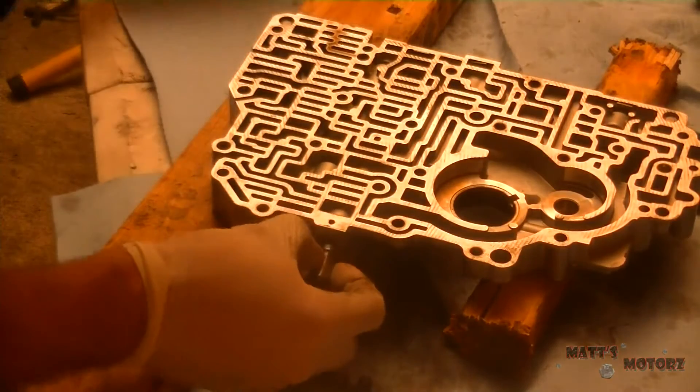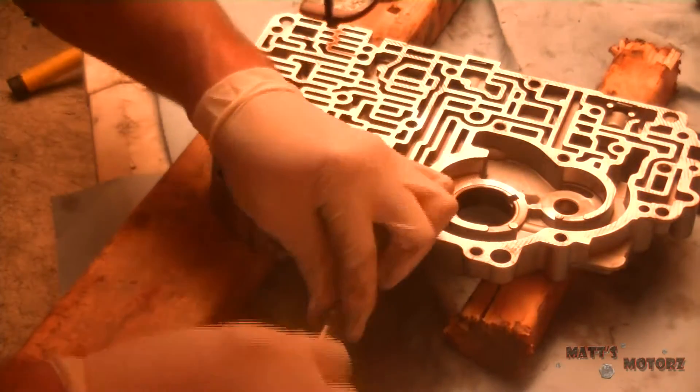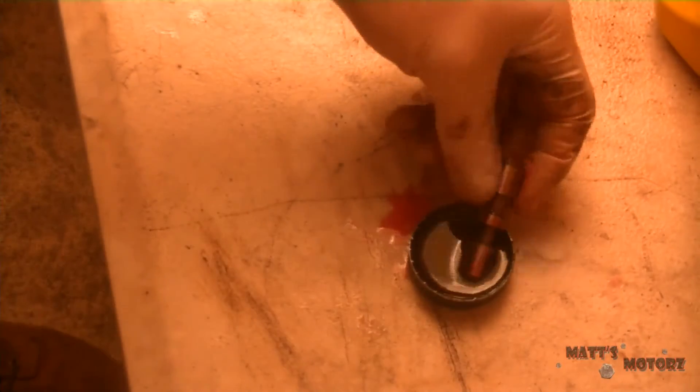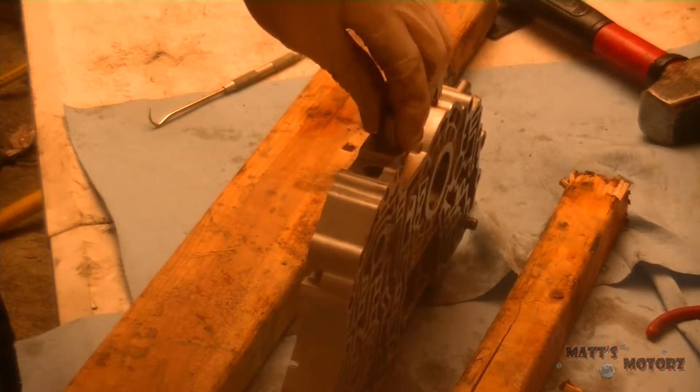Sometimes you have to use your pick to sort of guide the valve along to get out of there. So each valve you want to coat in transmission fluid and you want to drop it into the valve body and let it see if it falls under its own weight.